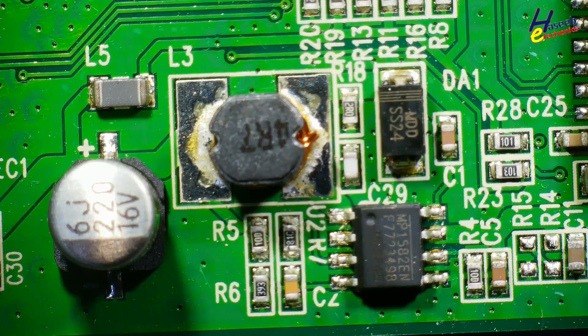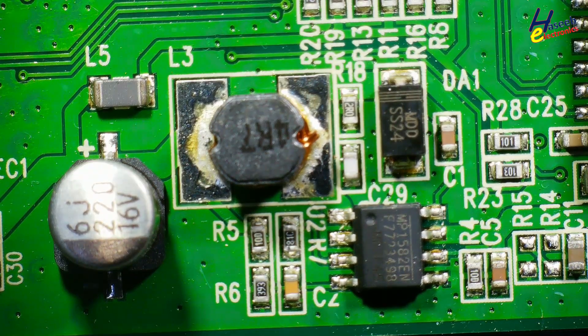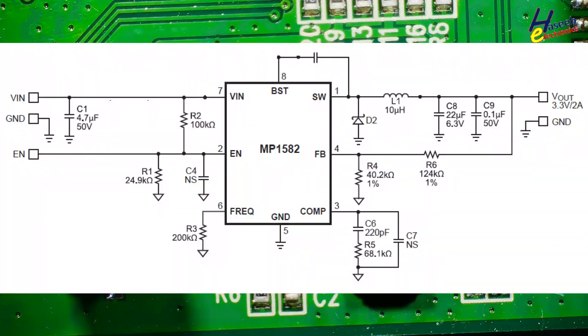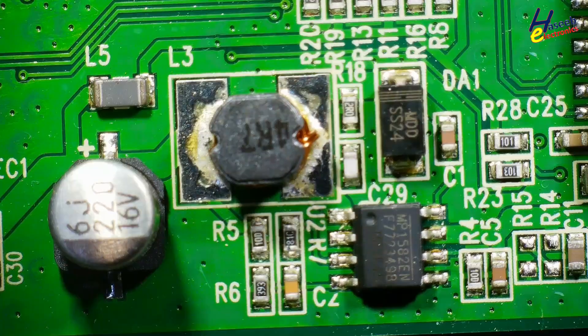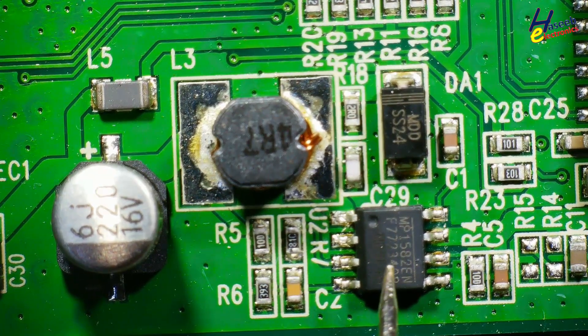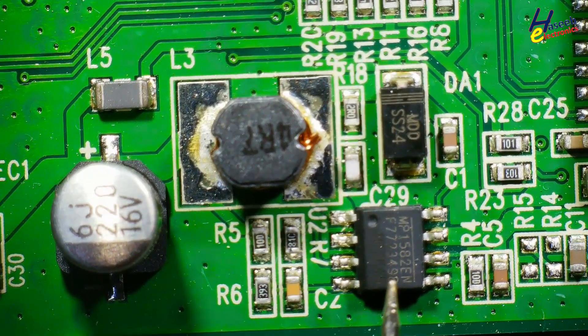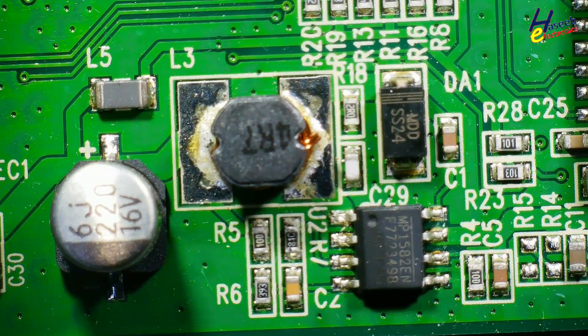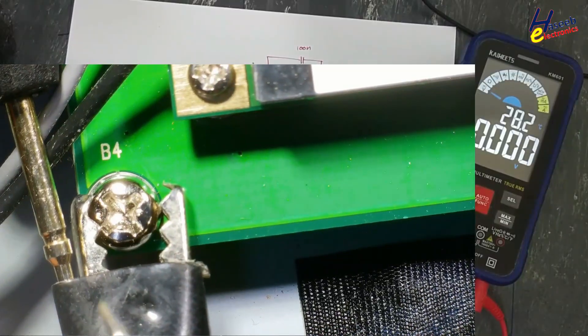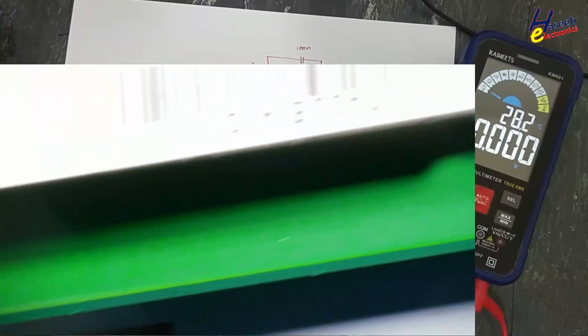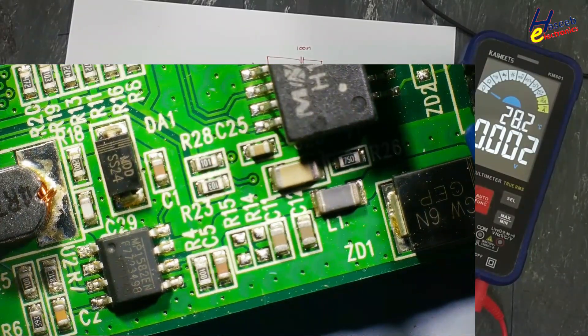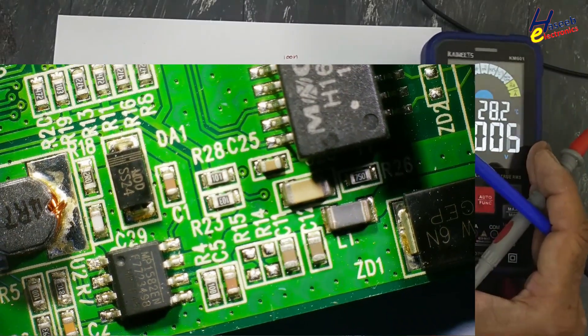Assalamualaikum warahmatullahi wabarakatuhu, friends. Welcome back to my channel. In this session we will see this 3.3 volt regulator using MP1582 IC. It is a DC to DC converter buck regulator switching regulator. It receives 12 volts on pin number seven. I connected the multimeter common to the power supply common and applied 12 volts to this DC line.